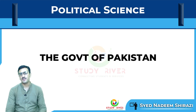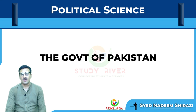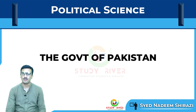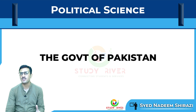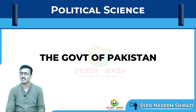Assalamu alaikum, I am Sayyid Nadeem Shirazi and today's topic of discussion is how to elect the president of Pakistan. Pakistan ka president ka election yeh kis tarah se hota hai aur overall yeh government jo banti hai — Pakistan mein federation ka structure hai. Pakistan is a federation, consisted of four major units with autonomy. The institution of president represents this federation.